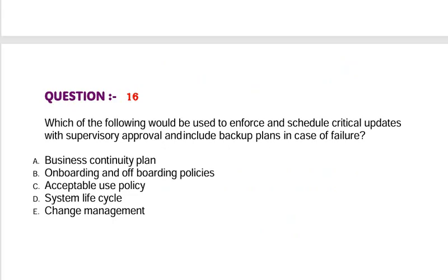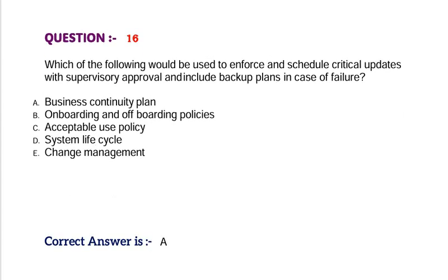Question: Which of the following would be used to enforce and schedule critical updates with supervisory approval and include backup plans in case of failure? Option A, business continuity plan. Option B, onboarding and offboarding policies. Option C, acceptable use policy. Option D, system lifecycle. Option E, change management. Correct answer is Option A.